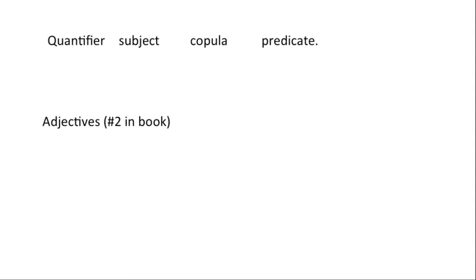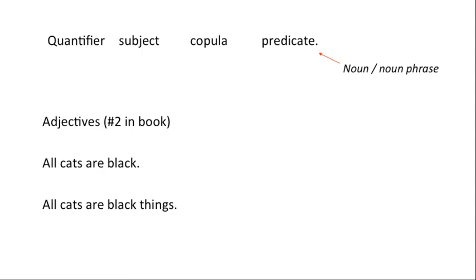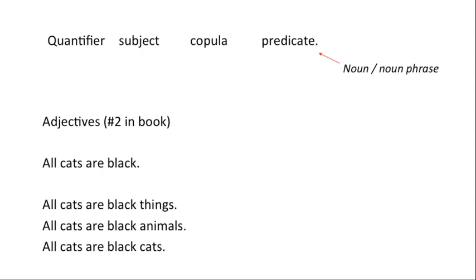Let's start with adjectives — this is number two in the book. We're aiming at quantifier, subject, copula, and predicate, and the predicate has to be a noun or noun phrase. A statement like 'all cats are black' is nearly categorically correct: the 'all' is fine, 'cats' is fine, 'are' is fine, but 'black' is not a group of things — it's just an adjective. So it's easy to fix: we say 'all cats are black things,' or maybe 'all cats are black animals,' or even 'all cats are black cats.' We have to add a noun — black things, black animals, black cats, black creatures — whatever has the same meaning as the original.